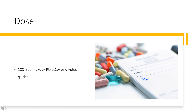Dose: Edema — 100–300 mg/day PO, once daily or divided every 12 hours. Hypertension (off-label) — 50–100 mg PO once daily or divided every 12 hours.